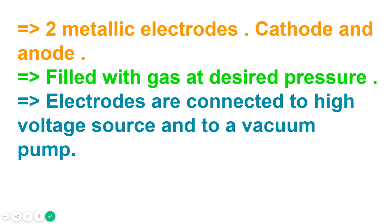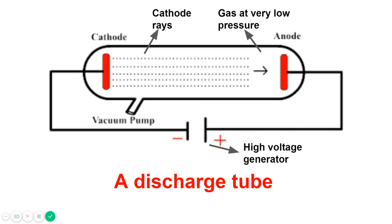This is the discharge tube. As you can see, this is the cathode, which is a negatively charged electrode. This is the anode, which is a positively charged electrode. Gas is present at very low pressure. These are the cathode rays, which I'm going to explain in the next part. This is the vacuum pump and this is the high voltage generator.